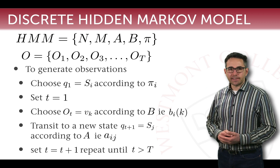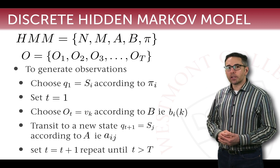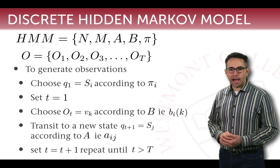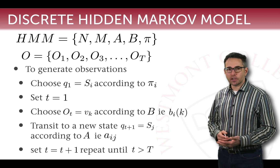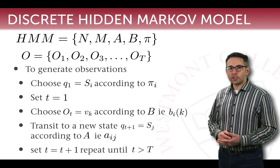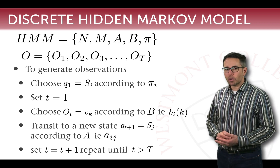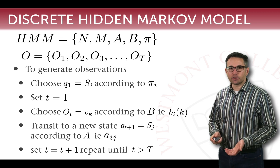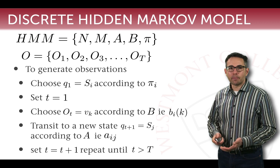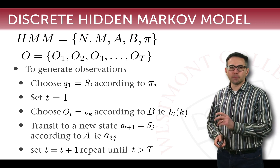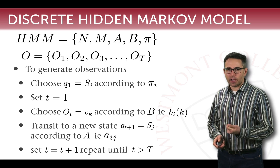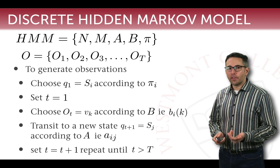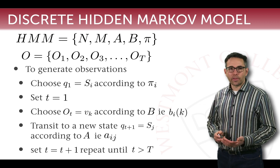We then set a variable t equal to 1 because we're in time step one, and now we choose an observation. We choose observation Oₜ — so O₁ — equal to one of the symbols vₖ, chosen according to our distribution B. Specifically, we choose randomly from the symbols given that we're currently in state Sᵢ. Just like a jar of M&Ms has a certain distribution of colors, we choose randomly one of those colors based on its probability, and that becomes the first observation we generate. Behind the curtain we've chosen a state and an observation; on the other side of the curtain, all that can be seen is the color of M&M drawn, or whether heads or tails were flipped.